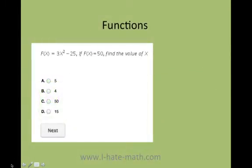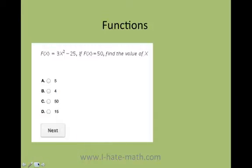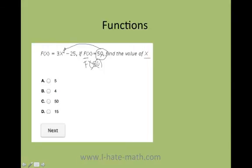We have this problem: f of x equals 3x squared minus 25. They say if f of x equals 50, find the value of x. We have to be very careful here because many students will just plug the value of 50 into the x, and that is wrong. They're telling me that f of x is 50 — they are not telling me to find f of 50. That is very different.